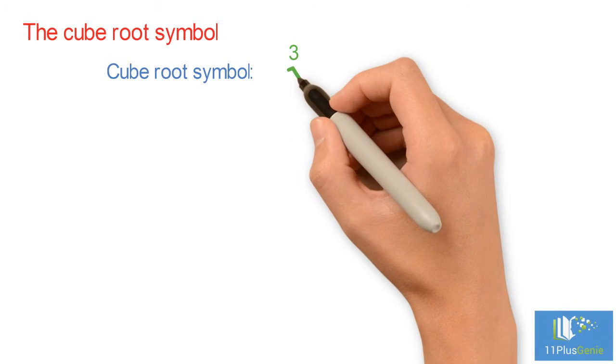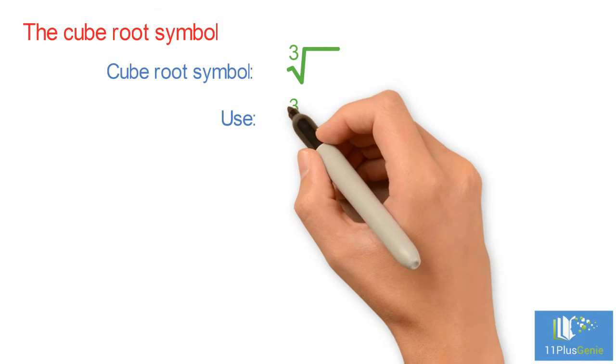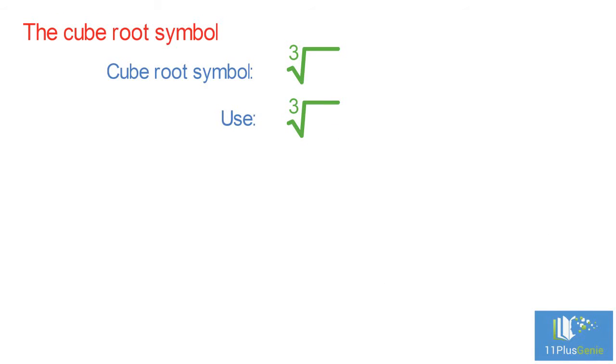The cube root symbol. This is the special symbol that means cube root. It is the same symbol used for square roots but with a little 3 to mean cube root. You can use it like this. We say the cube root of 27 equals 3.